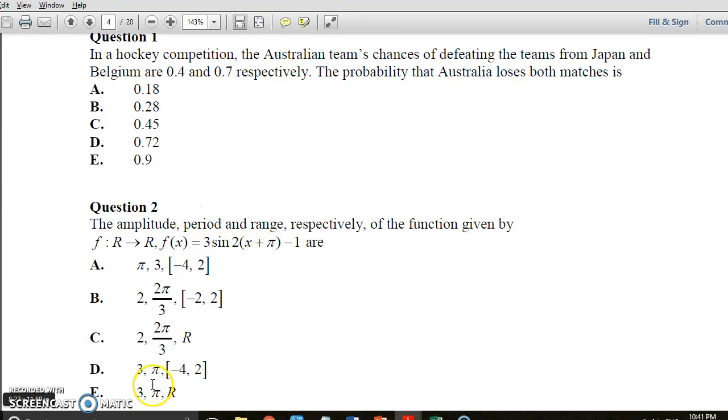Looking at this, the range we've got different ranges here. We've got a period of pi for both of these and then we've got a range of negative 4 to 2 or R which is all real numbers. For a sine graph, we know a sine graph goes up and down like that. It is not going to be all real numbers so it's going to be this one. This one ends up being D.